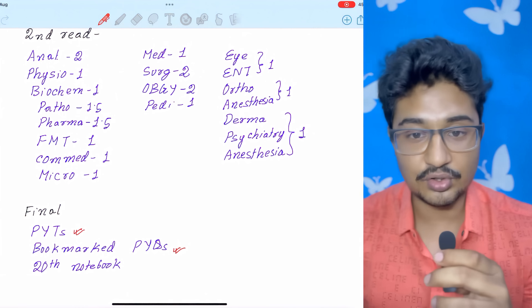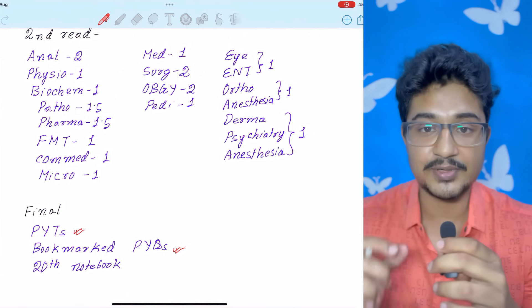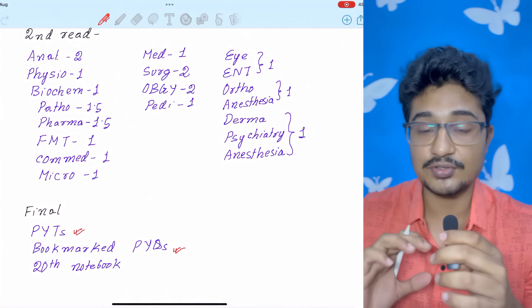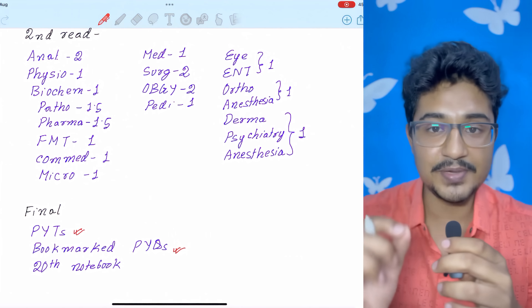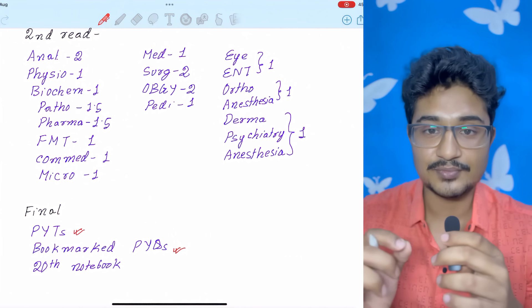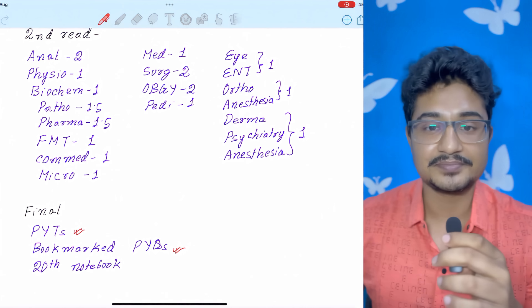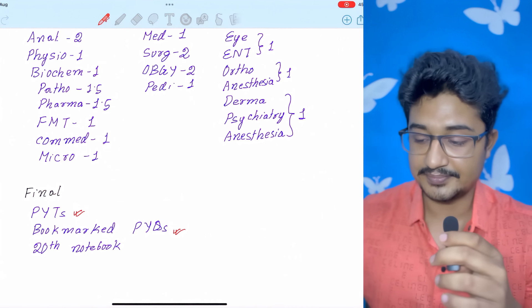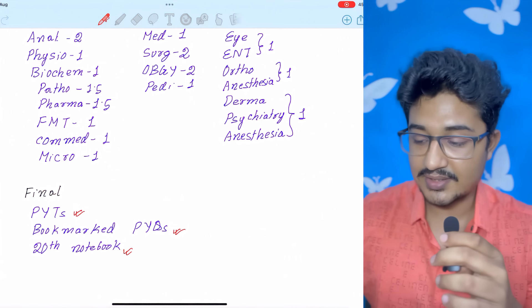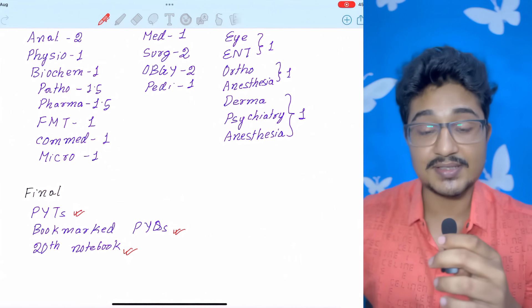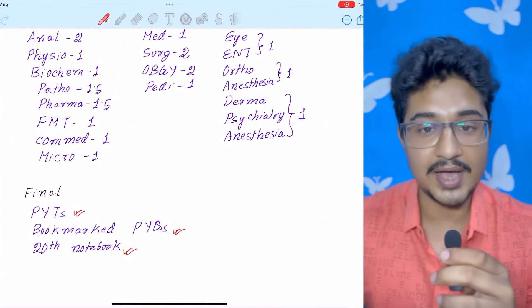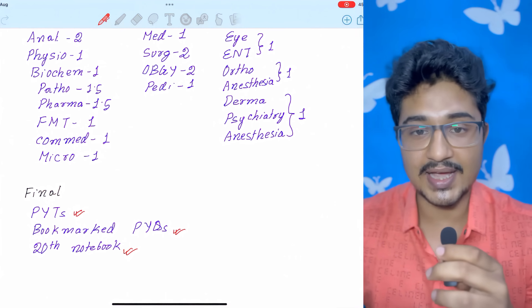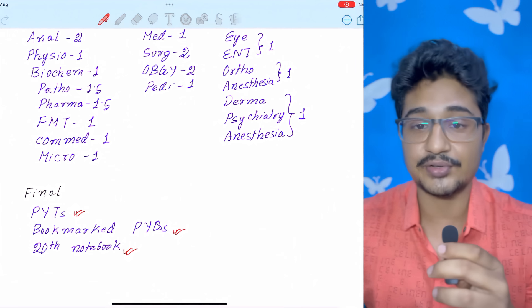Because not just solving the previous year question, you have to bookmark the important previous year questions. And in the end, you should visit them so that you don't make mistakes. Because if one of the PYQs is wrong, it is not capable of forgiveness. You have to have all the PYQs in your tongue tip. And the last you should revise is the 20th notebook that you have prepared yourself. If you follow this, you will get a decent and a respectable rank in the INICT November 2025.